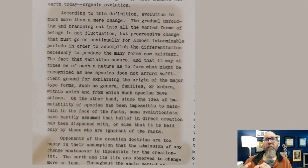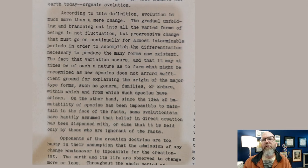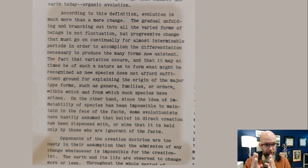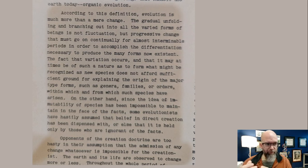Back to the text: 'According to this definition, evolution is much more than mere change. The gradual unfolding and branching out into all the various forms of beings is not fluctuation, but progressive change that must go on continually for almost interminable periods in order to accomplish the differentiation necessary to produce the many forms that now exist.' He's trying to explain what evolution must do if you're going to have a universal common ancestor. 'The fact that variation occurs and that it may at times be of such a nature as to form what might be recognized as new species does not afford sufficient ground for explaining the origin of the major type forms such as genera, families, or orders.'